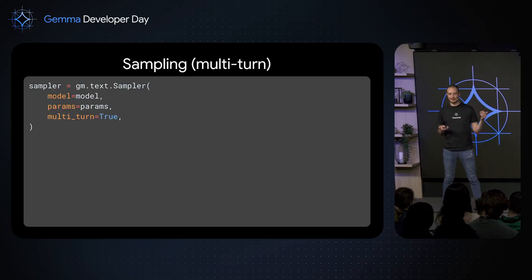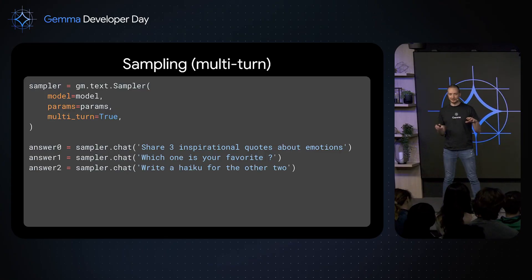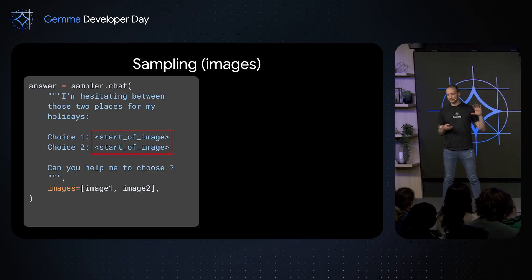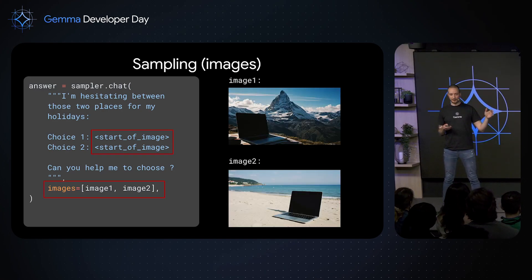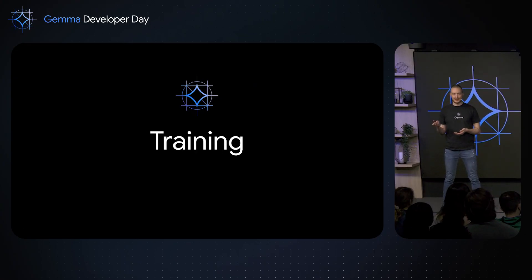You can also try the multi-turn capability of our models. You activate multi-turn in the sampler and the model will remember the context of your query and automatically handle caching, so it only computes your last queries. Similarly, with multi-modal, you only need to specify the special token inside your prompt and provide raw images to the chat interface. In this case, Gemma 3 will help me choose where to spend my next holidays.